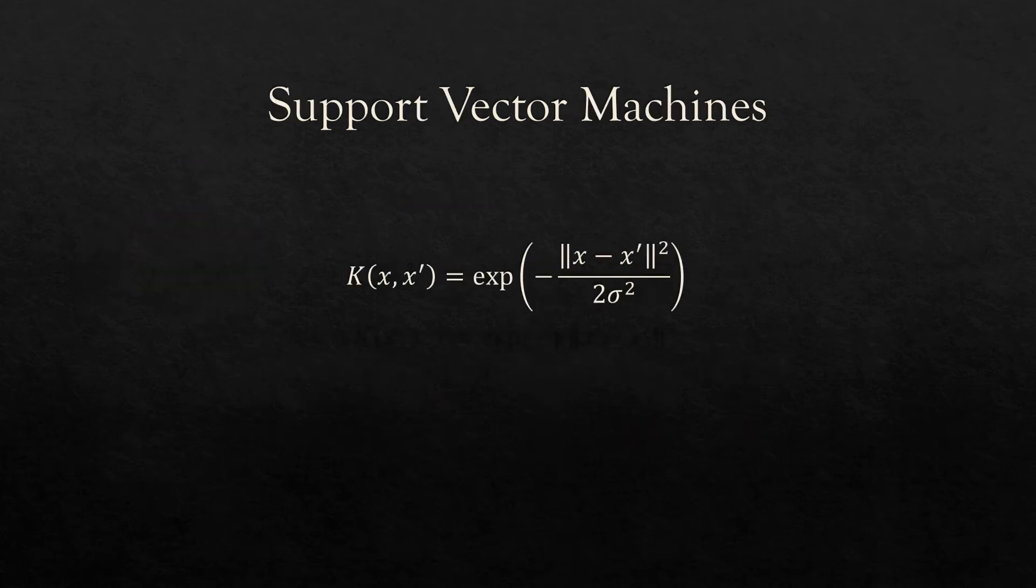And finally, support vector machines are called upon to aid in this classification task using the radial basis function kernel. This is where the Euclidean norm of vector x minus x prime squared is the Euclidean distance between the two feature vectors, and gamma equals 1 over 2 standard deviations squared. Simplifying the equation, we have the following.